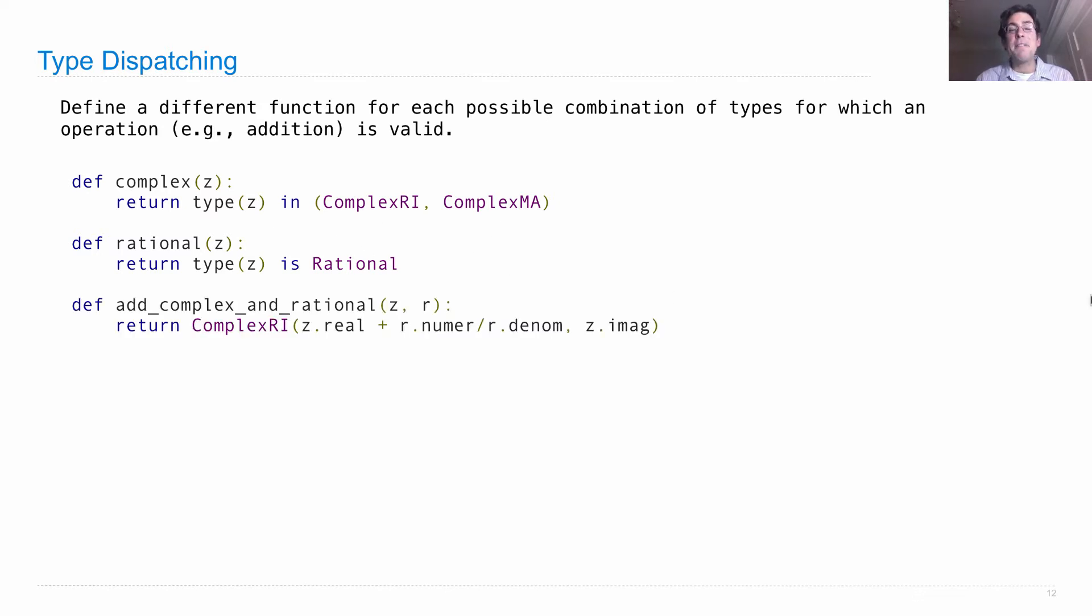And then, we need to define a function that combines a complex and a rational number. This is the one function that gets to know about both representations.